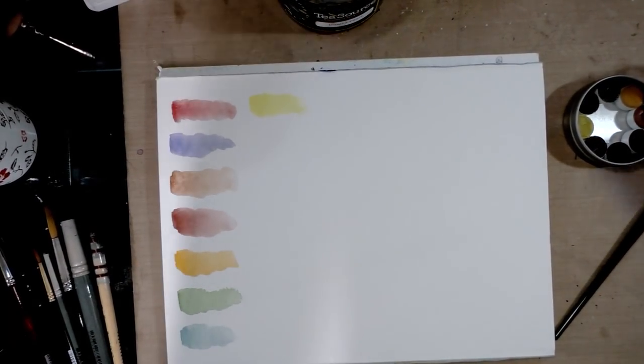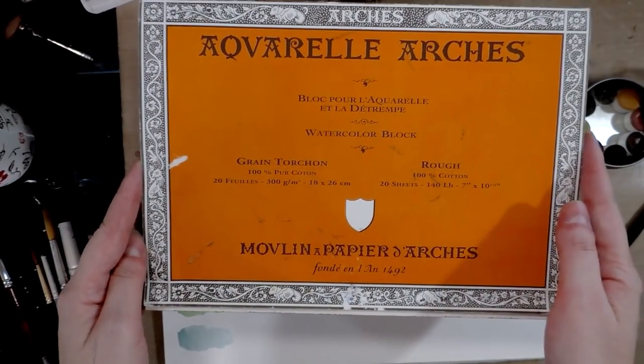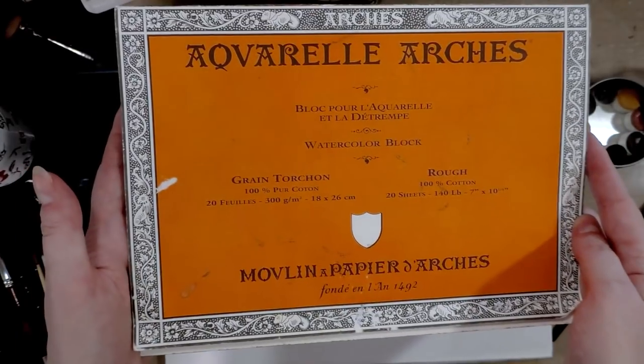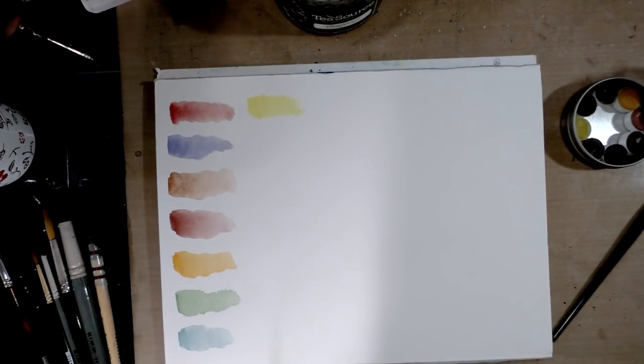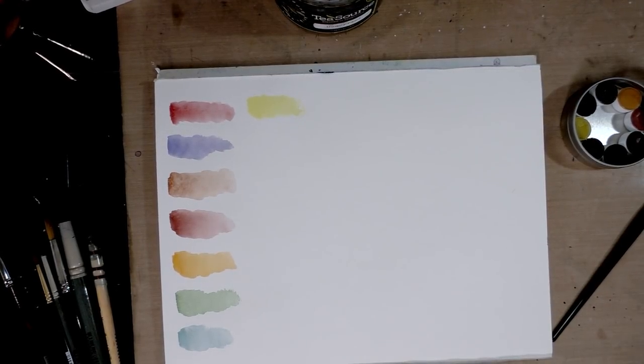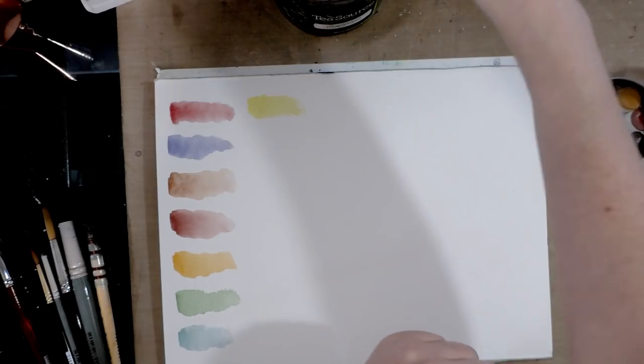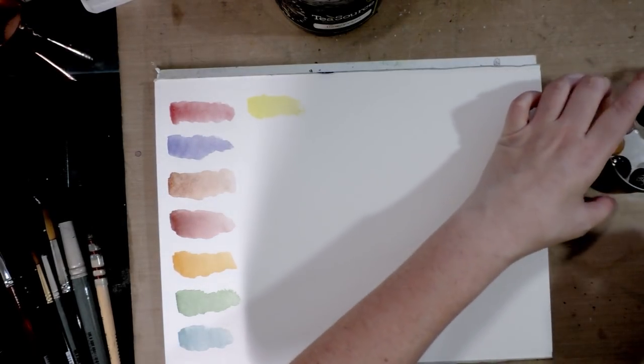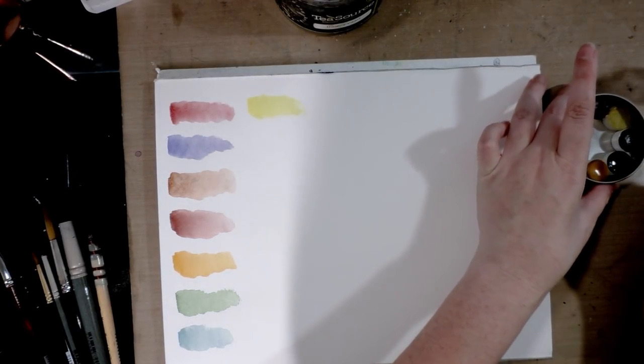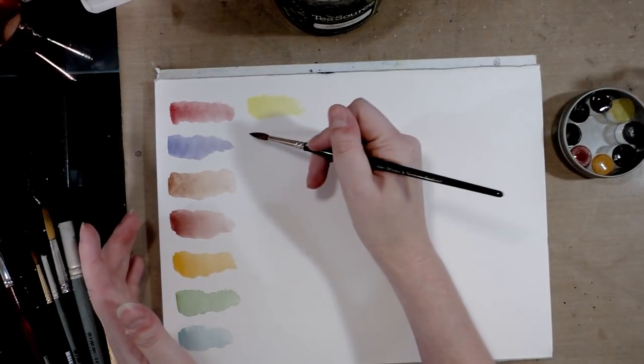The Kilimanjaro 140 pound has gone on a permanent hiatus of hiding from me, so I'm going to use this 140 pound Arches cotton rag paper instead. I'm just going to go ahead now and re-swatch these colors starting from Tulip Mayan Red.